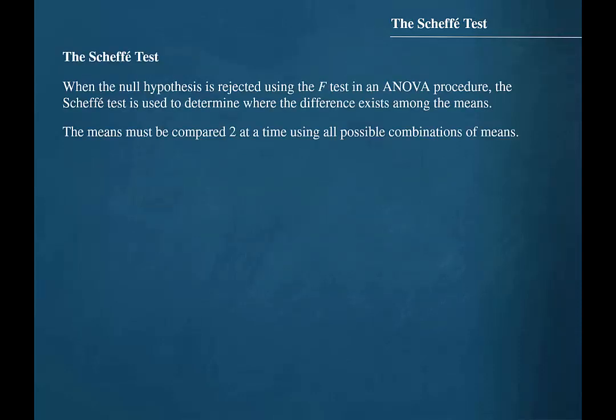When the null hypothesis is rejected using the F test in an ANOVA procedure, the Scheffé test is used to determine where the difference exists among the means. The means must be compared two at a time using all possible combinations of means.